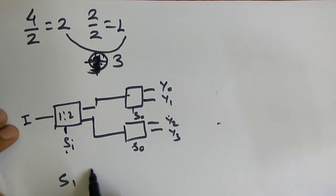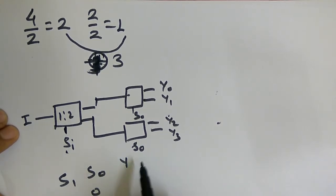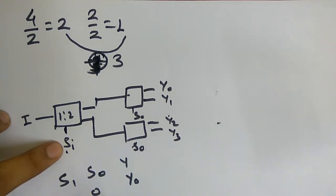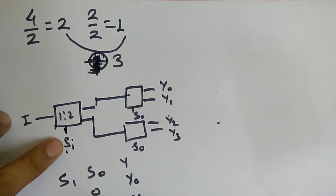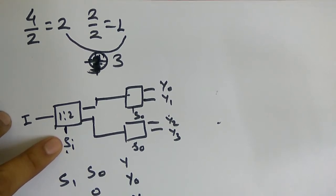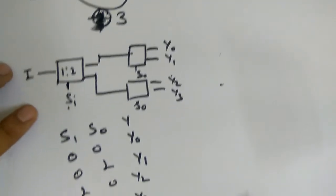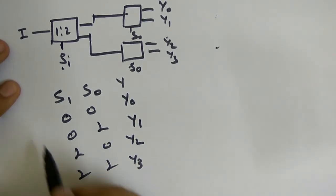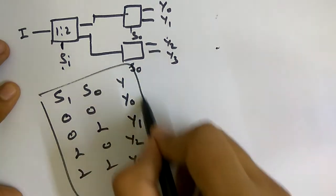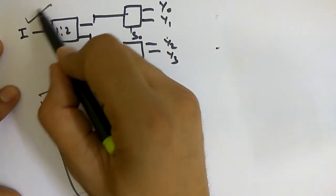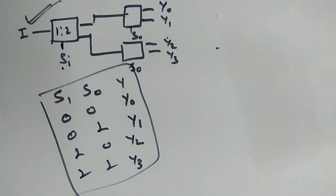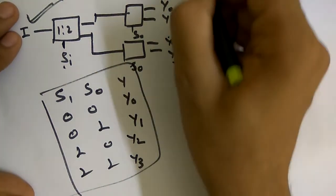When S1 and S0 are both 0, output goes to Y0. When S1=0 and S0=1, output goes to Y1. When S1=1 and S0=0, output goes to Y2. When S1=1 and S0=1, output goes to Y3. This matches the truth table we saw earlier. You can do it on your own similarly to how we did it in multiplexer.